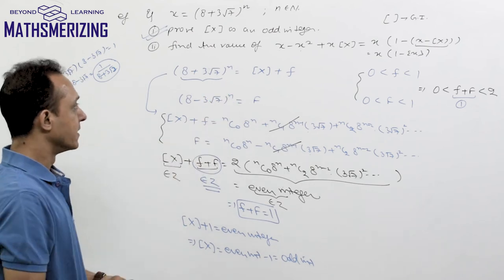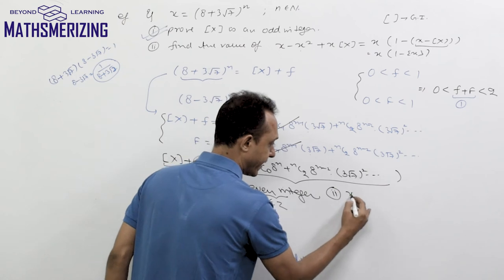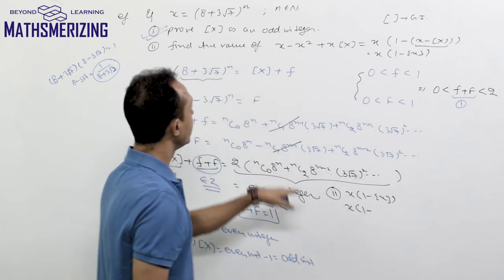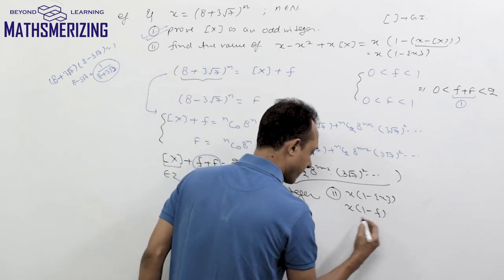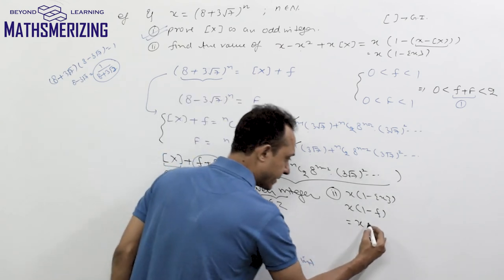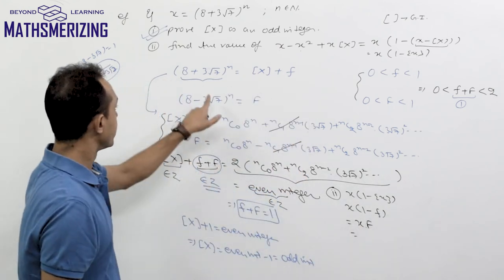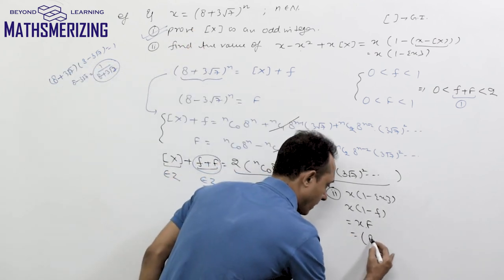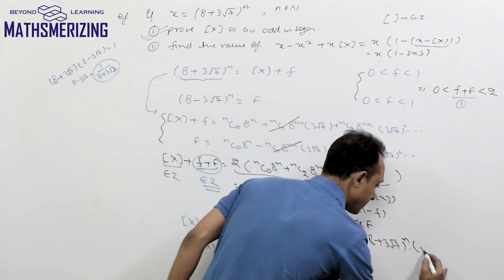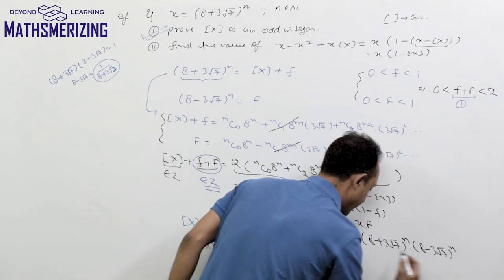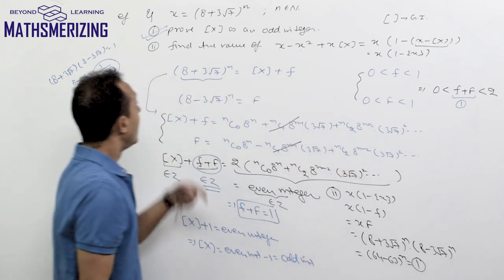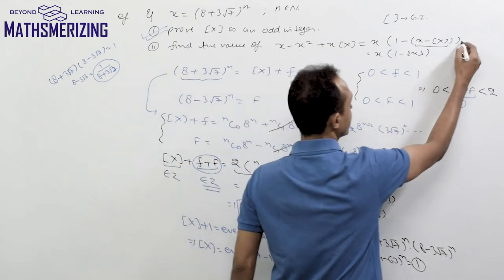For the second part, we need to find x·(1 − {x}). Since {x} = f and f + F = 1, we have 1 − f = F. So the expression becomes x·F, which is (8 + 3√7)^n · (8 − 3√7)^n = (64 − 63)^n = 1^n = 1. The value of this expression is 1.